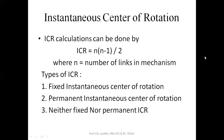Now, for any given mechanism, the number of instantaneous centers is calculated using the formula: ICR = N(N−1)/2, where N is the number of links. There are three types of ICRs: first, fixed instantaneous center; second, permanent ICR; and third, neither fixed nor permanent ICR. We will see how to locate these in the mechanism in the next slide.